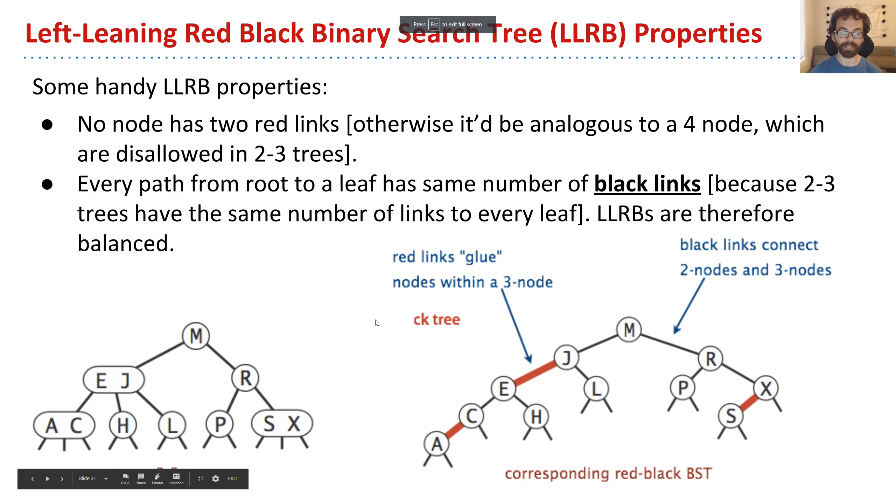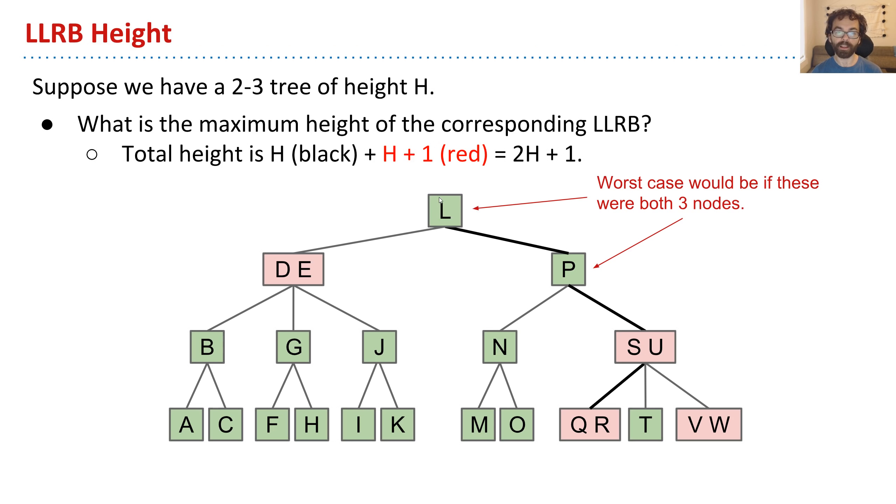Anyway, this should say left-leaning red black tree. And so here, the 2-3 tree, right? Every single leaf is two links away from the root. And in the corresponding red black tree, every single leaf is two black links away from the root. So for example, A is two black links from the root. H is two black links from the root. L is two blacks from the root, and so forth. The only thing that varies is the number of red links. And because no node has two red links touching it, what we can say, as we just saw, is that the overall height can never be more than 2H plus 1.